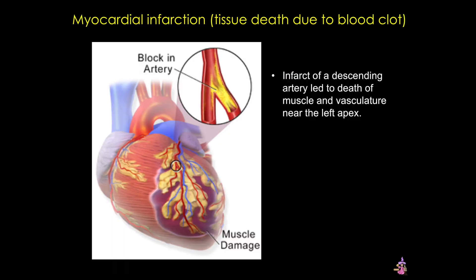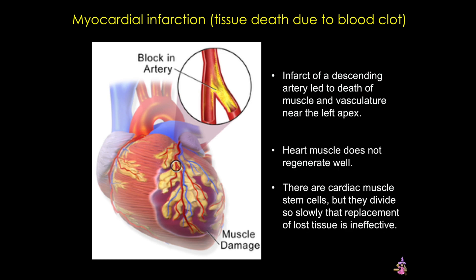Another series of changes occurs as a result of myocardial infarction. A blockage in an artery that feeds the heart tissue can lead to death of muscle tissue. In this example, a block in a coronary artery causes local ischemia, leading to the death of cardiac muscle and vasculature near the left apex. But why can't the muscle regenerate? The main problem is that stem cells in cardiac muscle divide slowly, so replacement of lost tissue is ineffective.